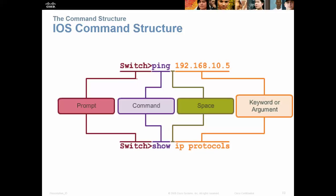Here's a visual of what you see at the command line: the switch name, the prompt showing your mode, the command you're entering — in this case, ping — then a space and the keyword or argument. In this case the argument is an IP address, and that's going to return a ping to 192.168.10.5.